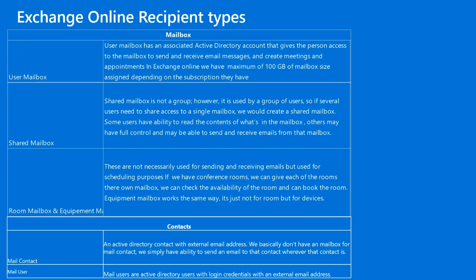We can also create room or equipment resource mailboxes. They are not necessarily used for sending and receiving emails, but are used for scheduling purposes. If we have a conference room, we can give each room its own mailbox to schedule usage and check availability. Equipment mailboxes work the same way — not just for rooms, but for laptops or other office equipment — giving them a mailbox for scheduling purposes.